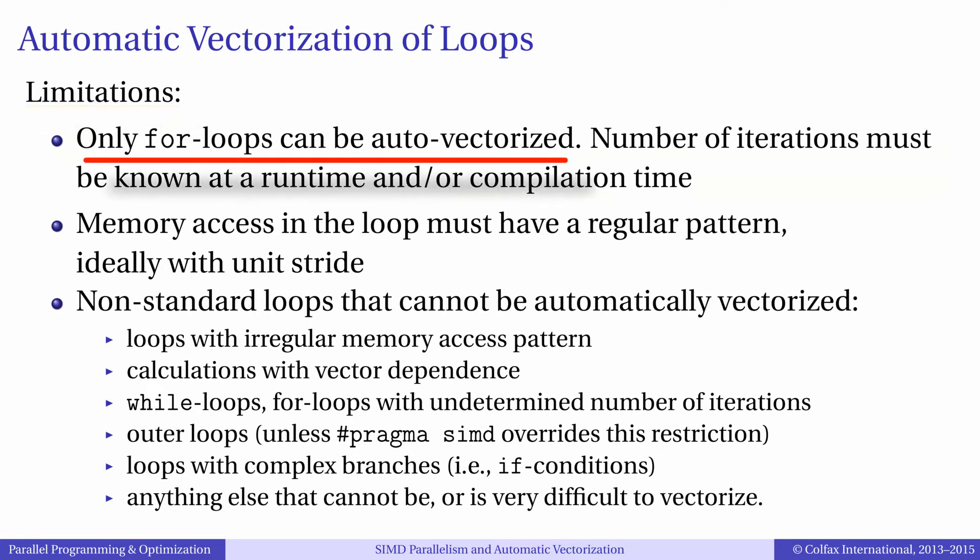Specifically, only for loops can be vectorized, and the number of iterations in for loops must be known at runtime, and for more aggressive optimizations even at the compilation time. For example, if your loop has a more complex termination condition than the typical i less than n, the loop may not be vectorized.